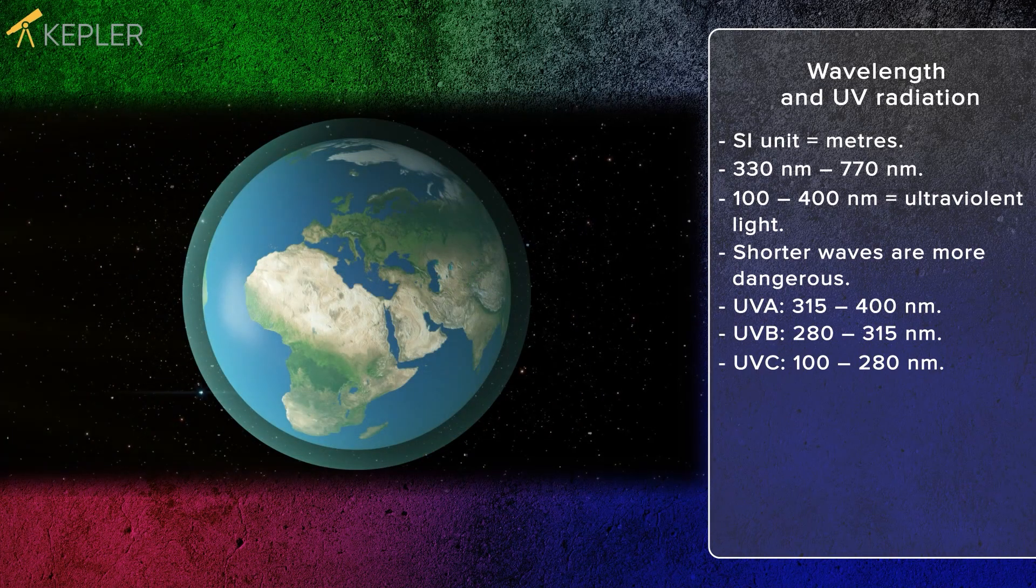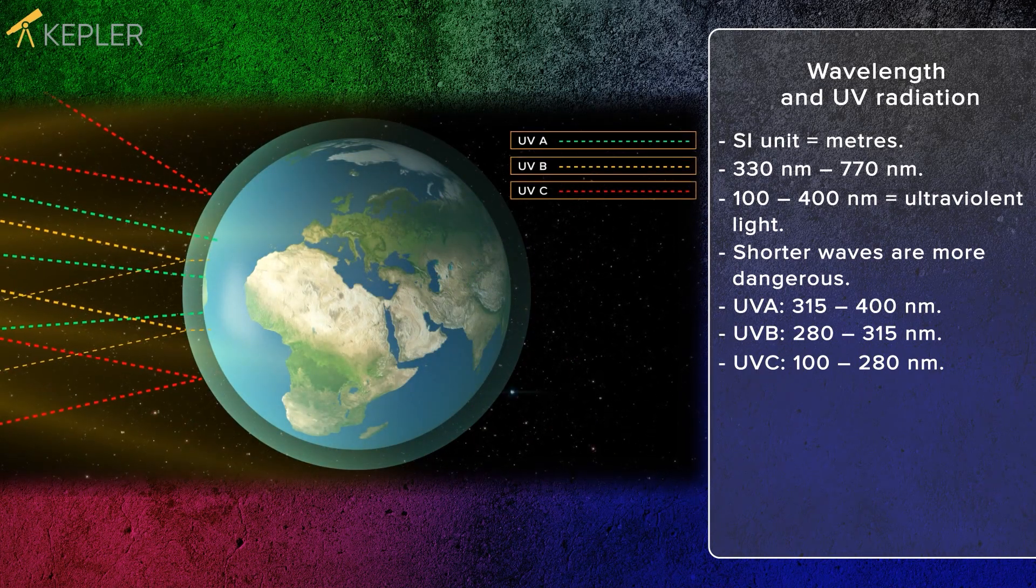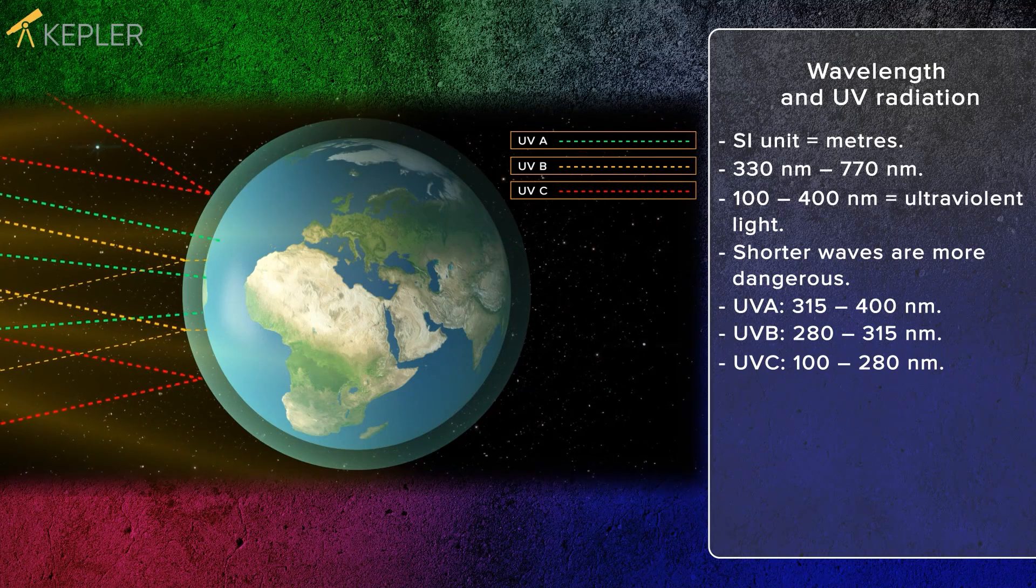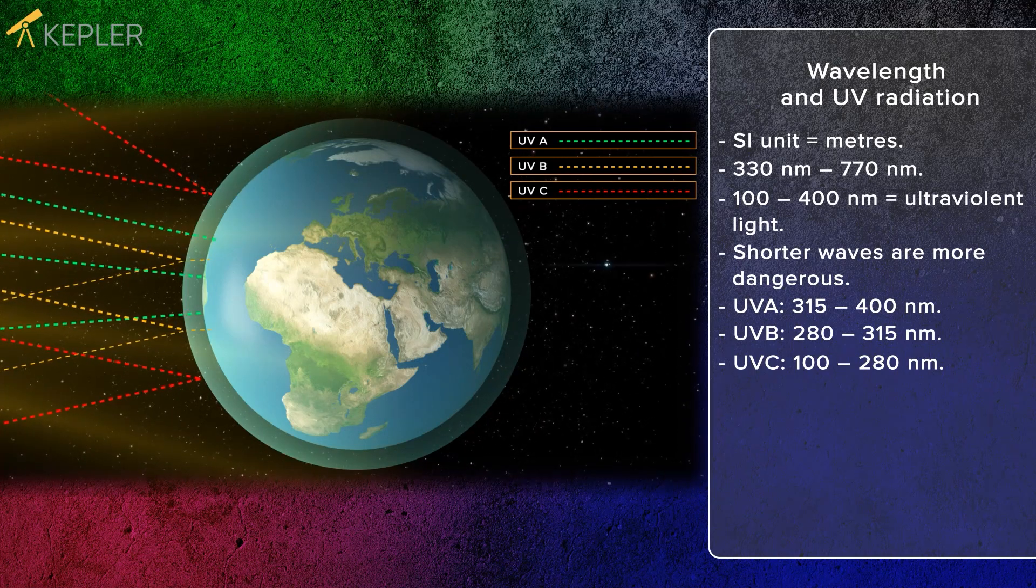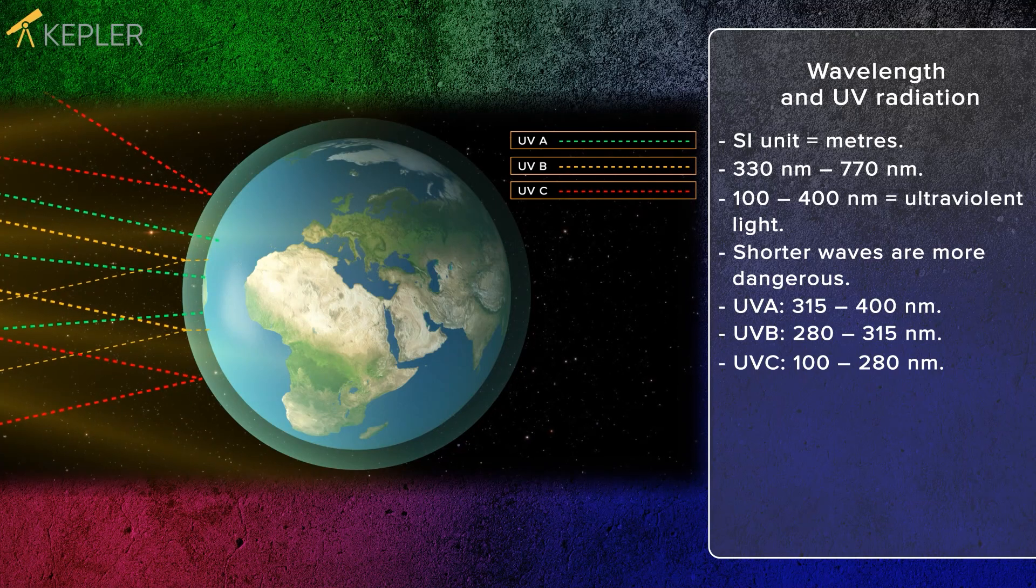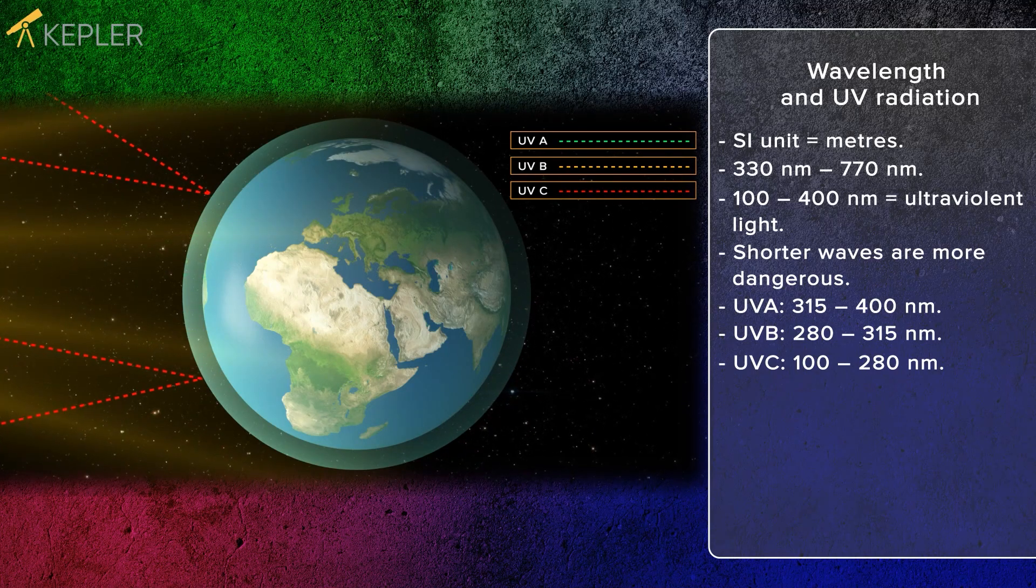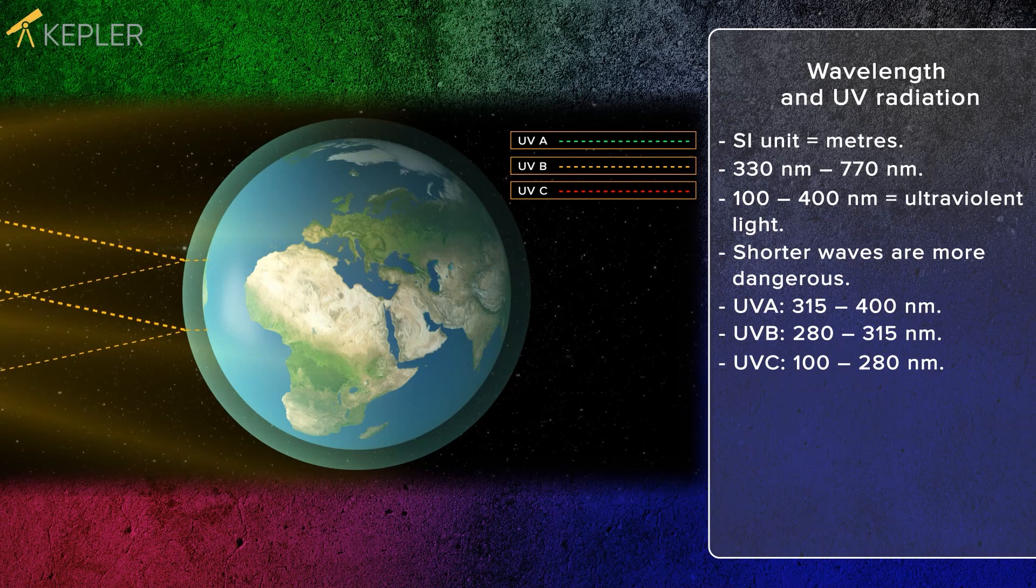The sun's rays contain all kinds of UV radiation, but the ozone layer exists to protect all living life on Earth from it. The ozone layer filters out all UVC radiation and some UVB radiation.